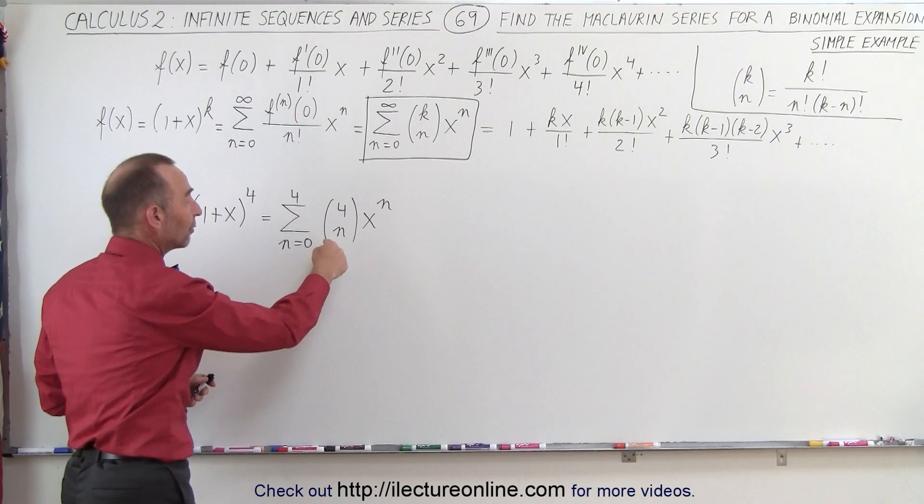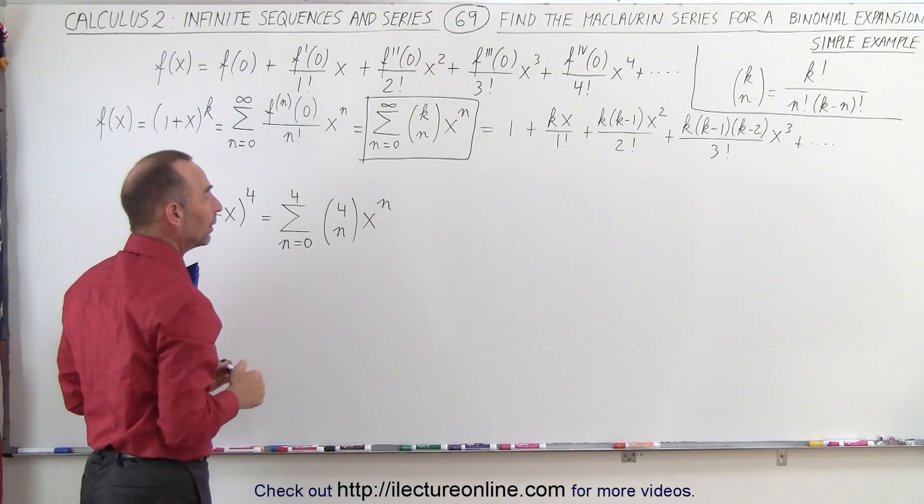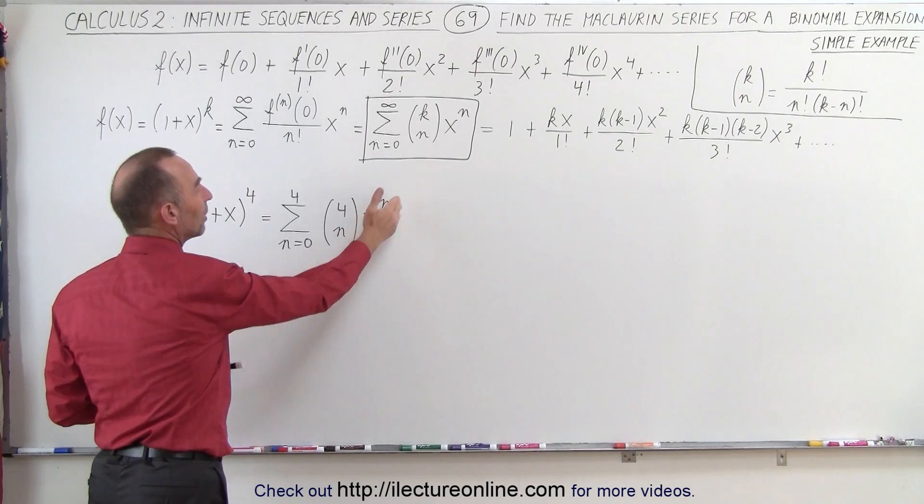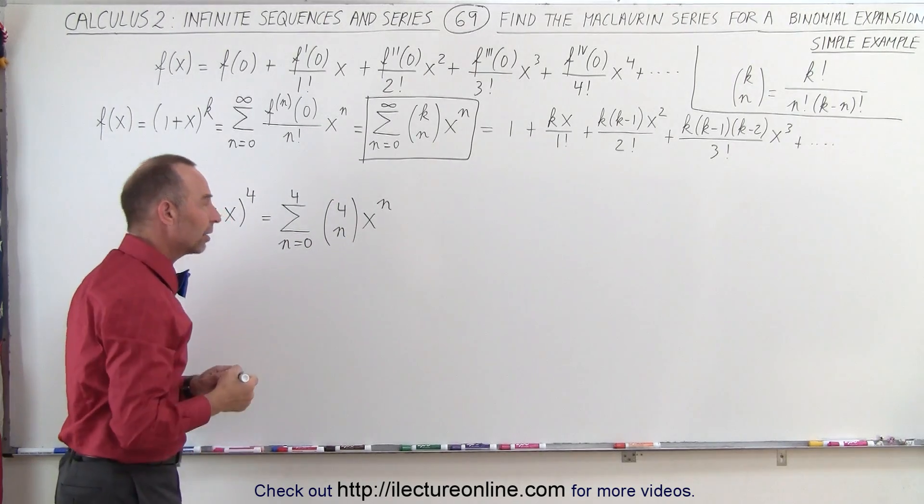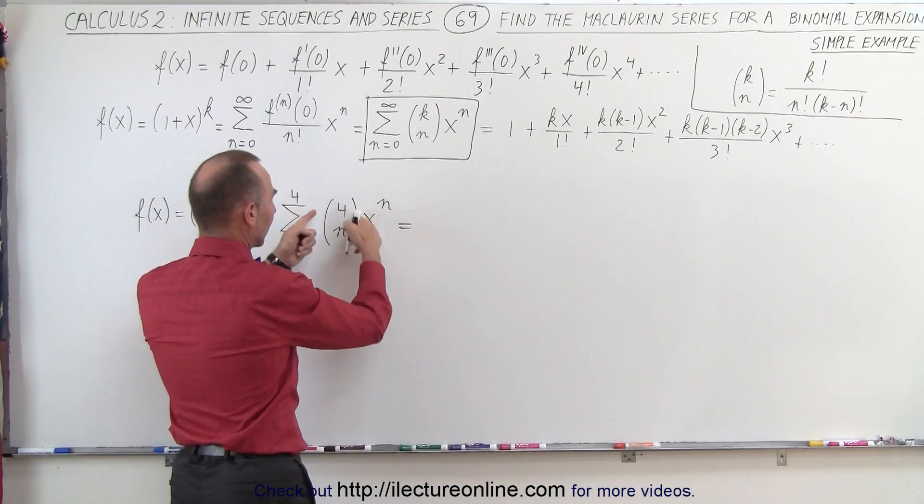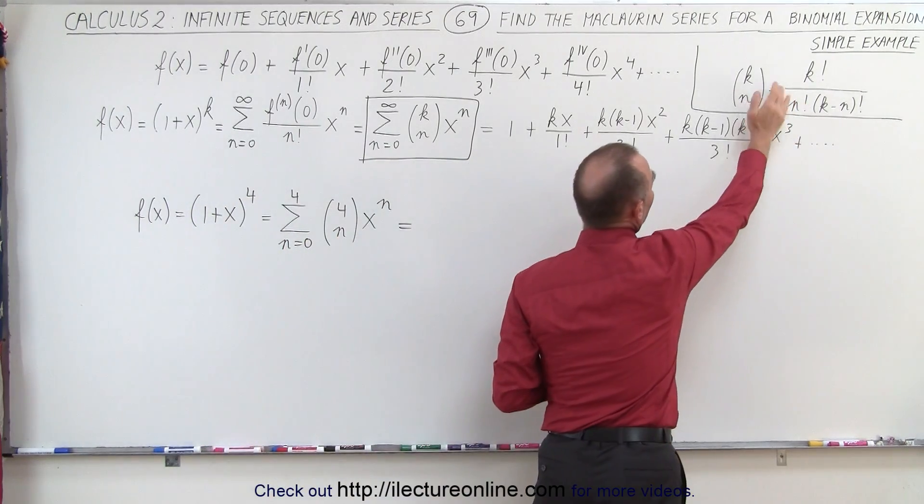In the previous video, we showed you how to find the coefficients of each, but we'll do it again. And then all we have to do is multiply times x to the n power, and we have our binomial expansion. So this becomes equal to, and if you forgot what this means, you can see the definition of it right here.